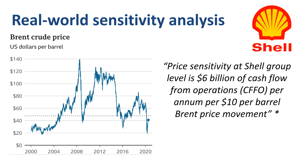If the oil price goes up by $10 per barrel, they expect $6 billion of incremental cash flow from operations. If the oil price goes down by $10 per barrel, they expect a decrease of $6 billion of cash flow from operations.